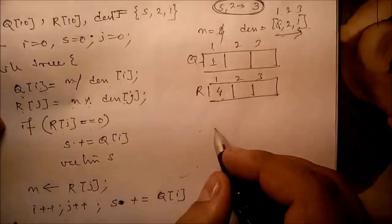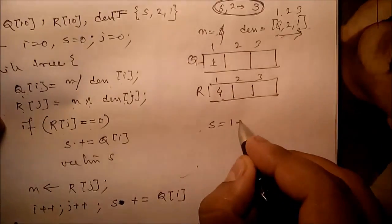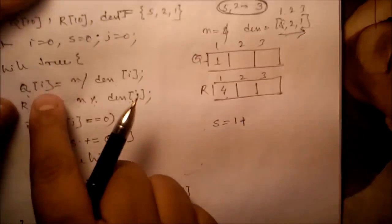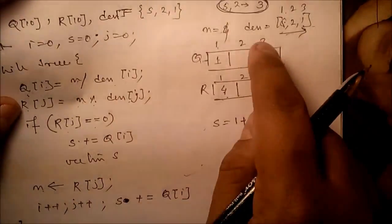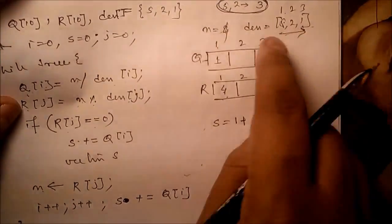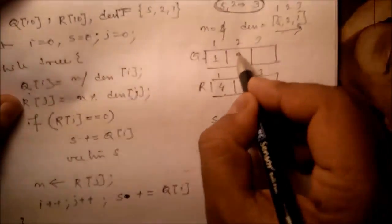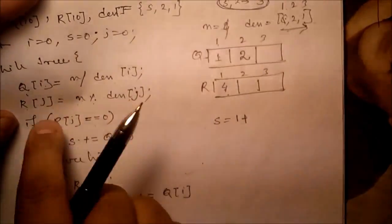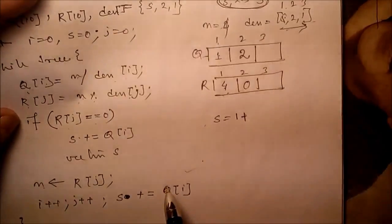So in s we store how many denominations we have. Next, q[i] equals n divided by denomination[i]. Now n is 4, 4 divided by 2, that's 2, so 2 here. Now 4 modulo 2, r[j] equals 0.